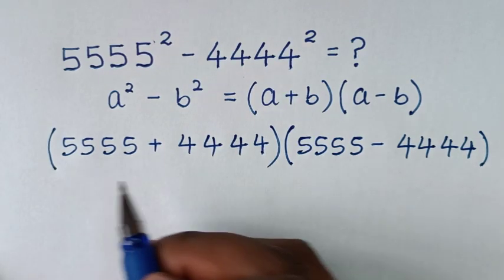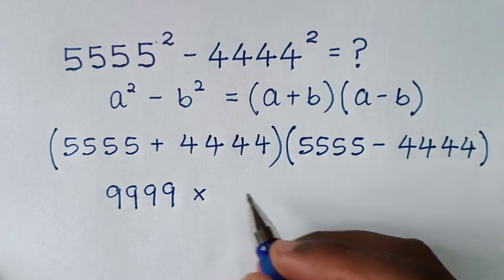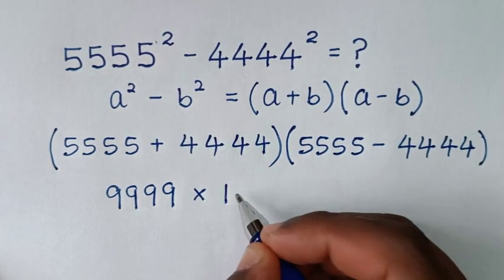Then in the next step, this plus this is 9999, then times this minus this, which is 1111.